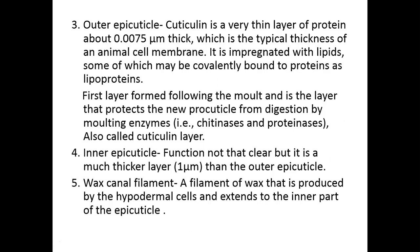The outer epicuticle is the first layer formed following the molt and is the layer that protects the new procuticle from digestion by molting enzymes — chitinase and proteinase — and is also called the cuticlin layer. The inner epicuticle function is not entirely clear, but it is a much thicker layer, more than one micrometer, compared to the outer epicuticle. The fourth sublayer is the wax canal filament, produced by hypodermal cells and extending to the inner epicuticle.